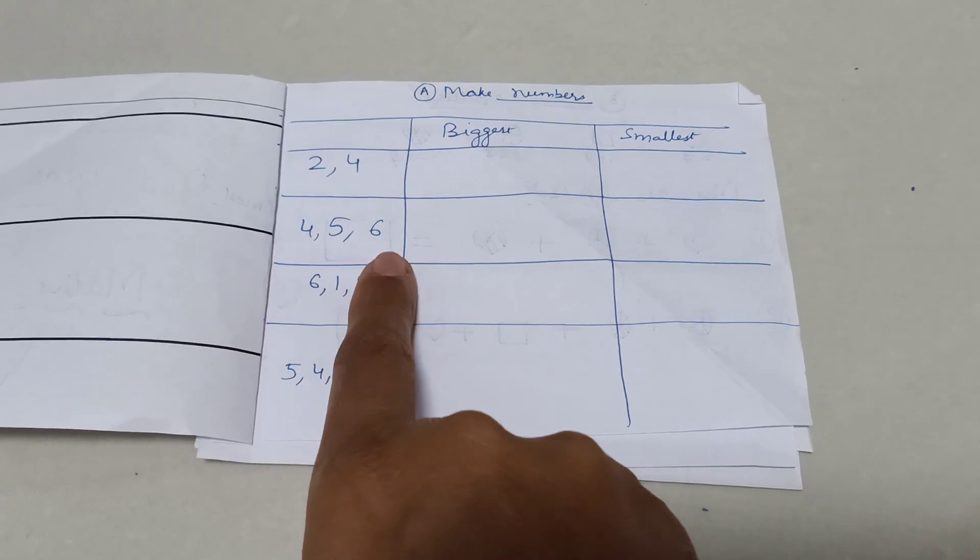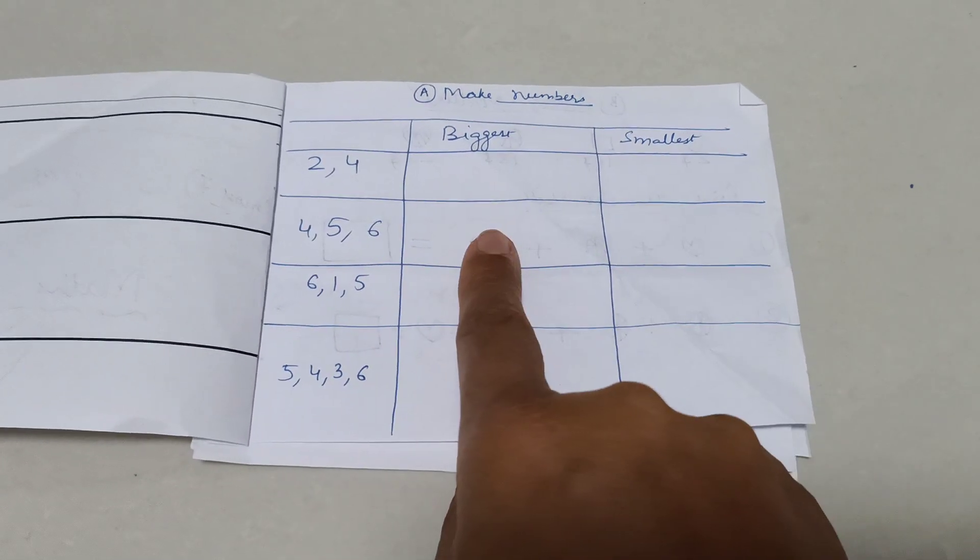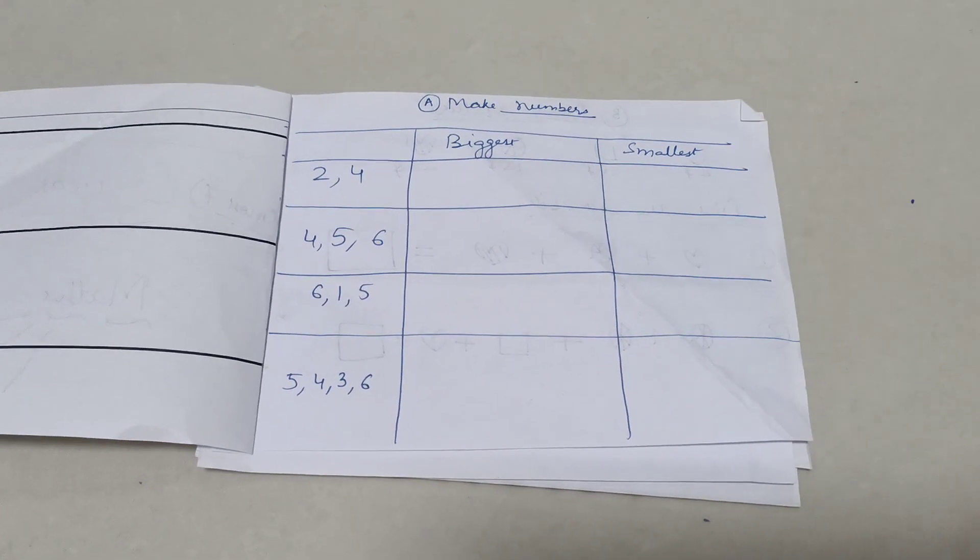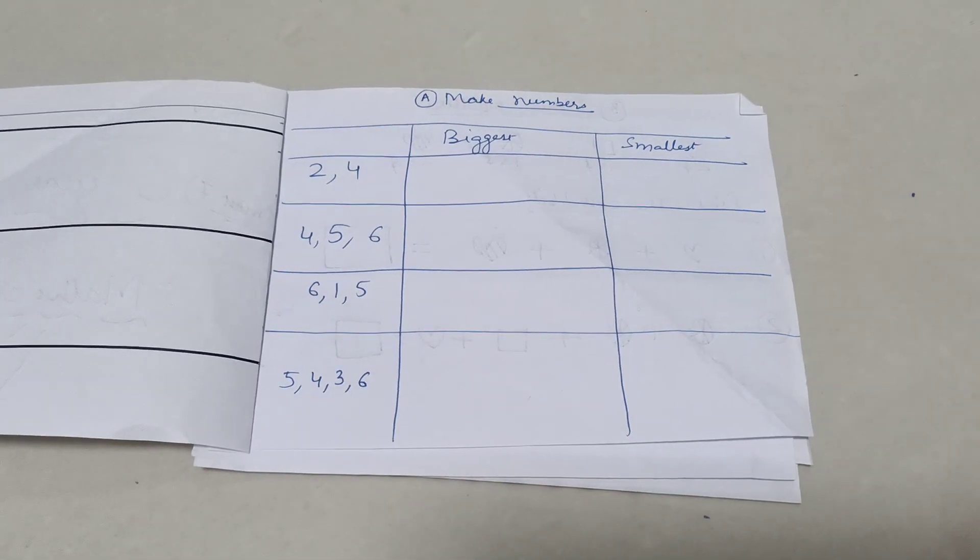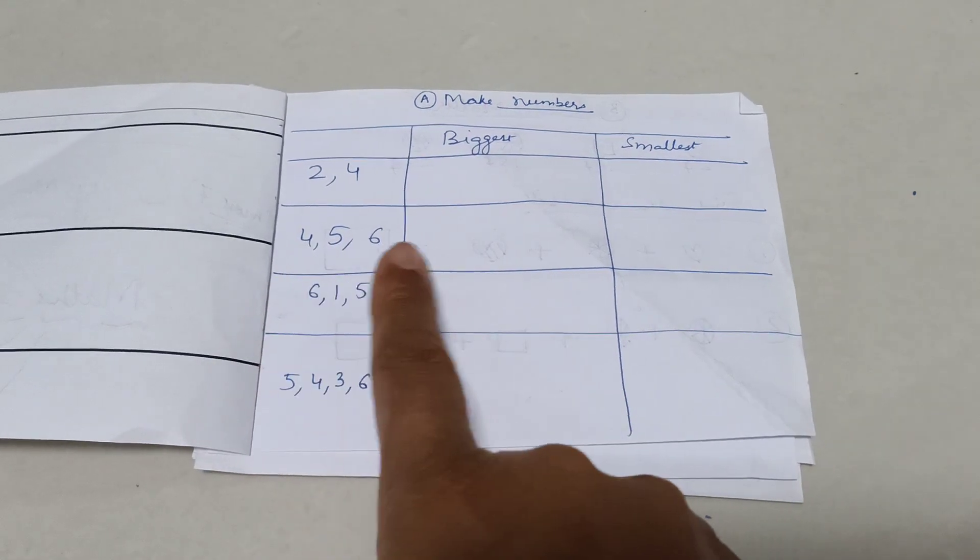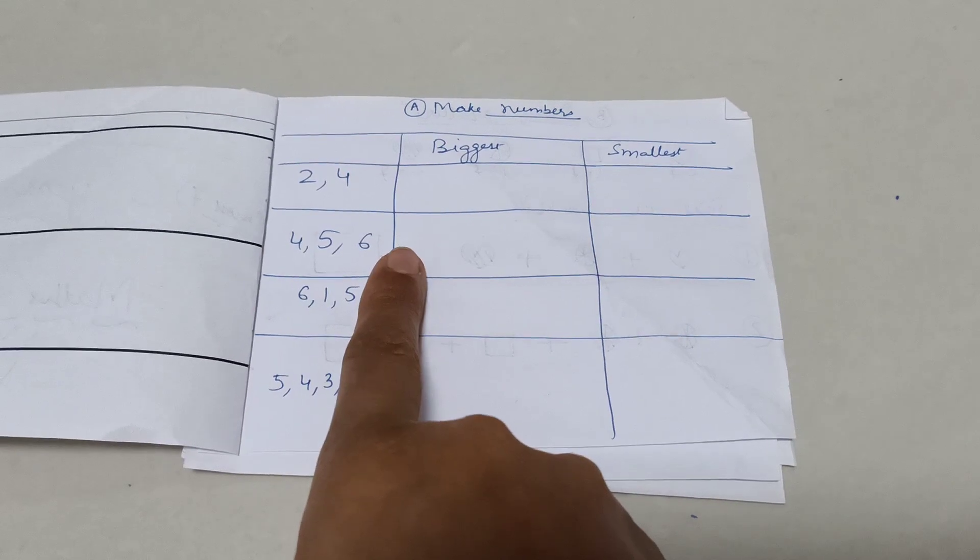Then we are going to 4, 5, 6. Now there are 3 numbers, 3 digits. What is the biggest number you can make? We have to make sure our 100th is the biggest number. So we make 654. What is the smallest number? We have to take the smallest at 100th place. So 456. Now it gets complicated.